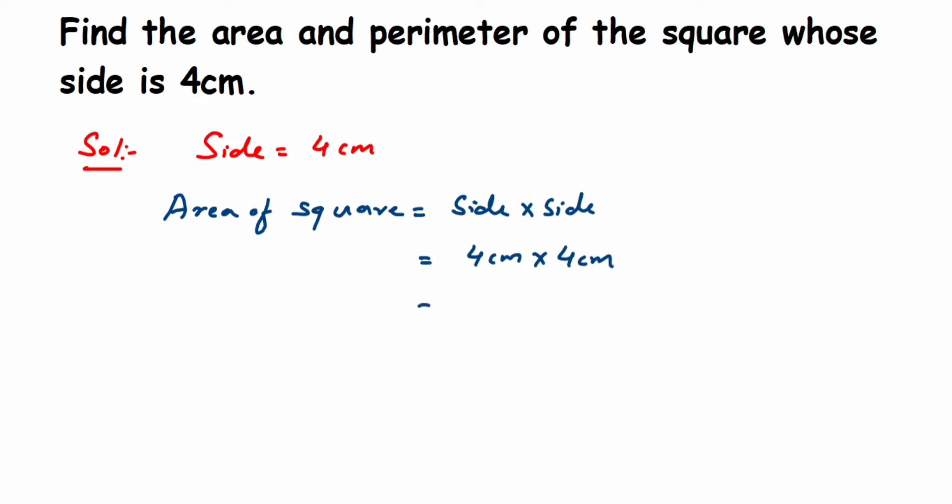So 4 times 4 is 16, so we'll get 16 centimeter squared. That's it. Now we're going to find out the perimeter.